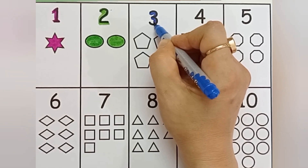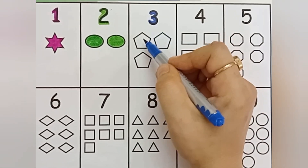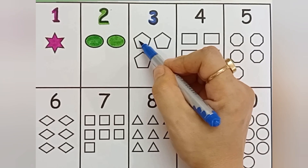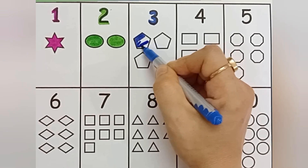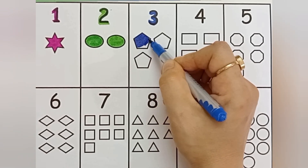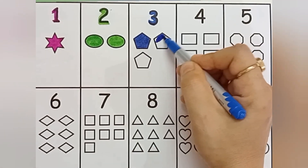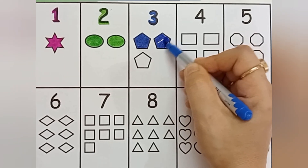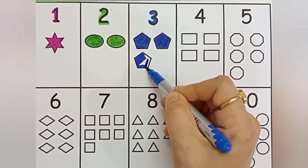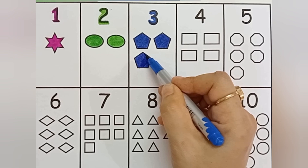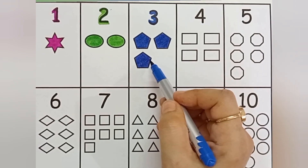Three. This shape is pentagon. One, two, three — pentagon. Pentagon shape. Blue color. One, two, three — three pentagons.